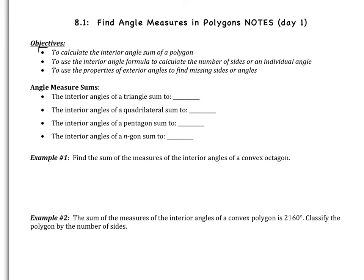Today we have three objectives. We're going to calculate interior angle sums of a polygon. We're also going to use the interior angle formula to calculate the number of sides given a figure or an individual angle in that figure, and then we are also going to use properties of the exterior angles.